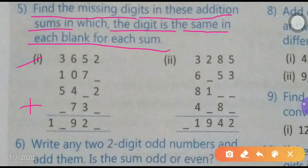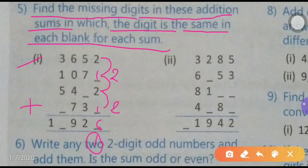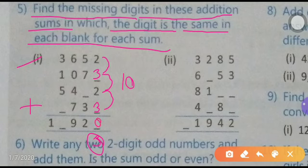If we put one in the blank: 2+1=3, 3+2=5, 5+1=6 — not the same. If we put two: 2+2=4, 4+2=6, 6+2=8 — not satisfied. If we put three: 2+3=5, 5+2=7, 7+3=10 — zero comes, not satisfied. If we put four: 2+4=6, 6+2=8, 8+4=12 — not satisfied.